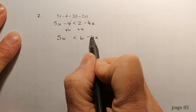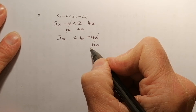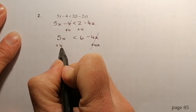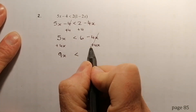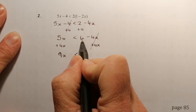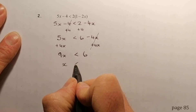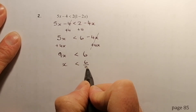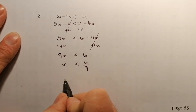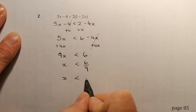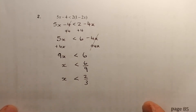Next I add 4x to both sides to eliminate the 4x on the right, giving me 9x is less than 6. I divide by 9 — and I'm not changing the sign around because it's a positive number I'm dividing by. Finally, simplifying the fraction 6 over 9 gives 2 over 3. So x is less than 2 thirds.